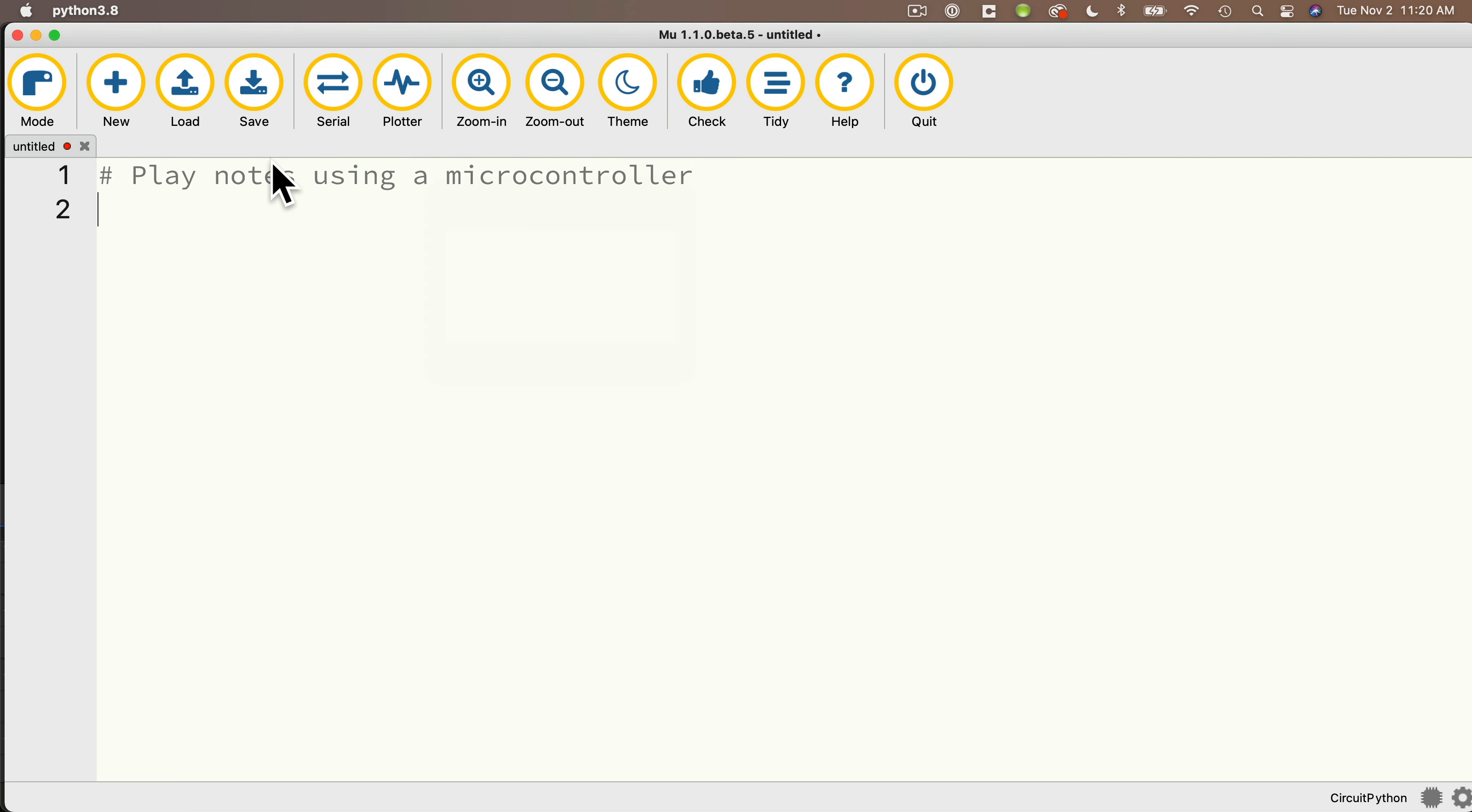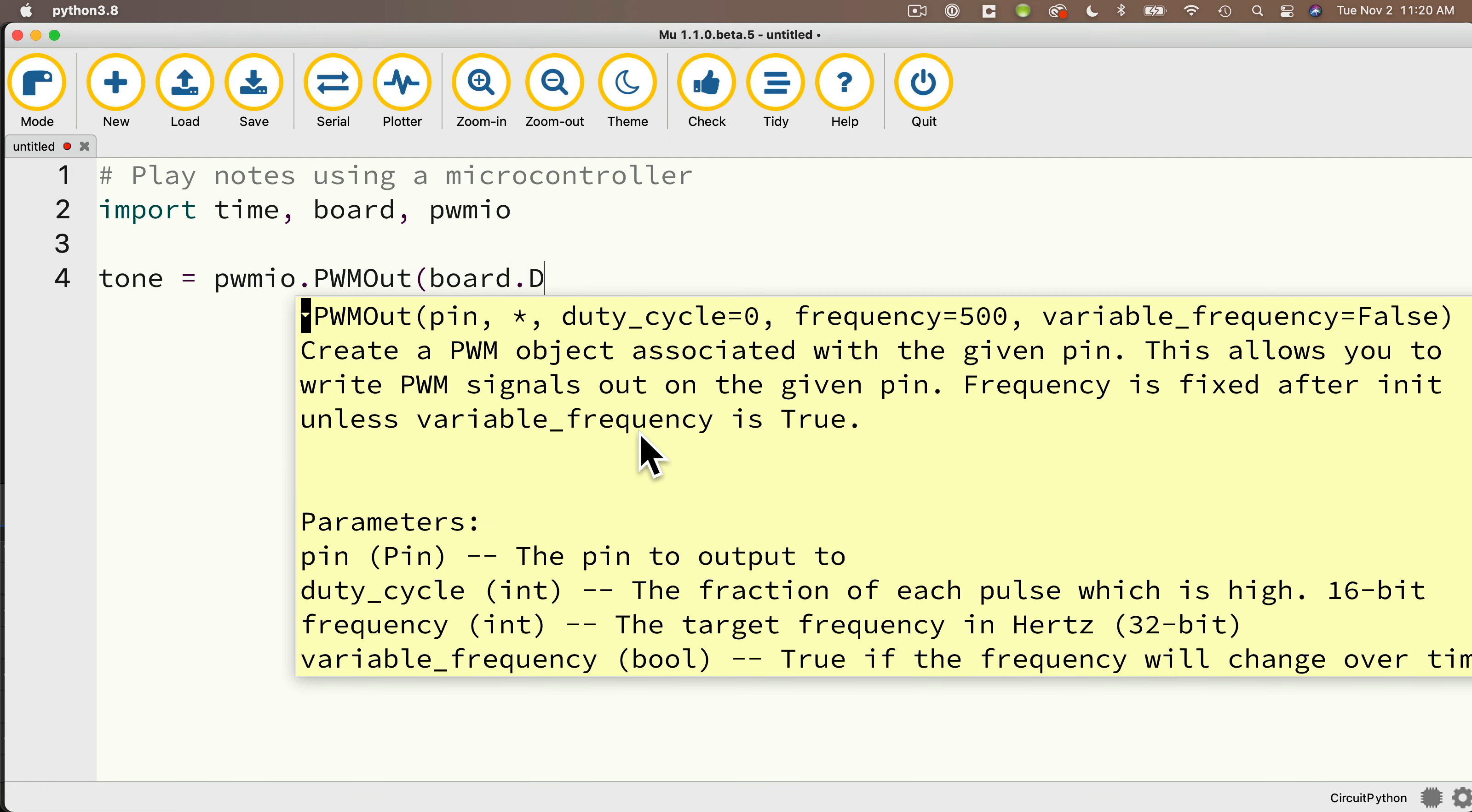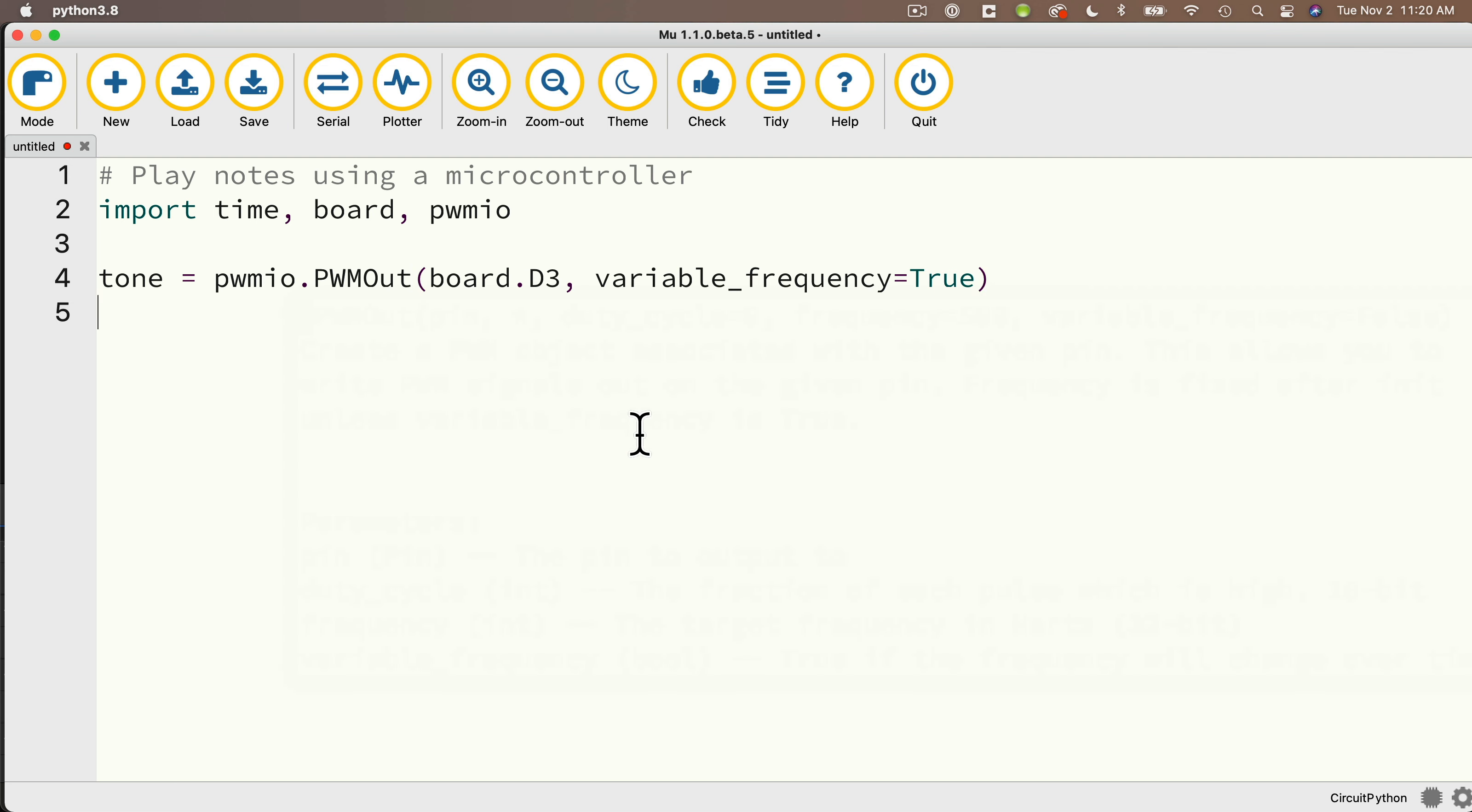We're going to play notes using a microcontroller. We're going to import time, board, pwmio. Then we're going to set up our pwmout object. We'll call that tone, set that equal to pwmio.PWMOut. That's with the PWM and the O all in caps. Then in parentheses, board.D3. Remember to change this if you've clipped the tip of your audio jack to another pin, then comma variable_frequency equals true. Then I'll create a variable called volume and set that equal to 25. And the way that we're going to change the volume of our speaker is we'll set tone.duty_cycle equal to volume.